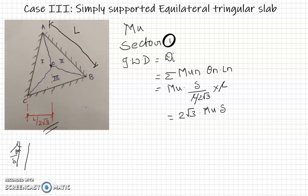Now external work done, Wp, can be written using the general equation: summation wu into area of the sector multiplied by delta g, which is the center of gravity. Here load is wu, area is the area of each sector, the triangle.